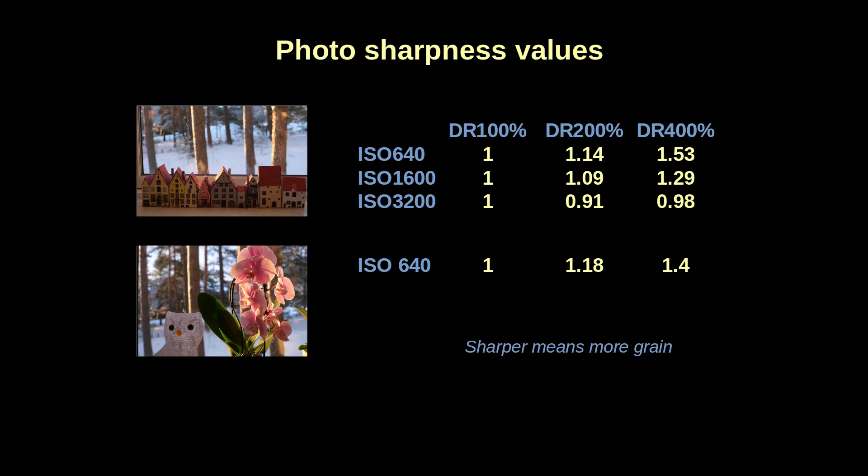I should revisit this noise topic in my future videos. Let me add the values I measured for some other photos, including one at ISO 1600. You see that the ISO 3200 was indeed an exception — the ISO 1600 behaves more like the lower ISO values did. So these numbers tell us that higher DR settings at the same base ISO value will affect noise in the photo.